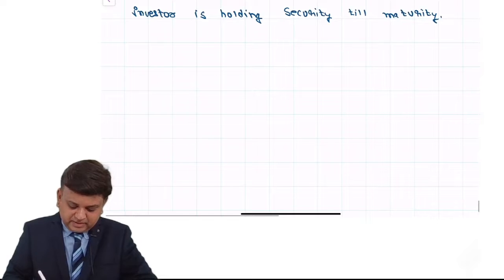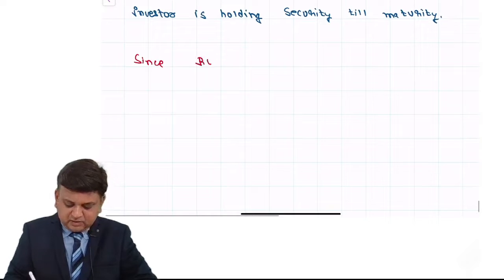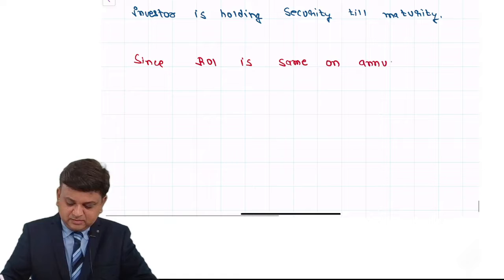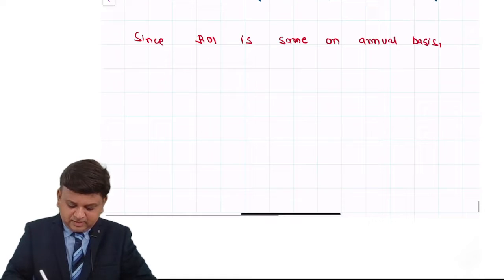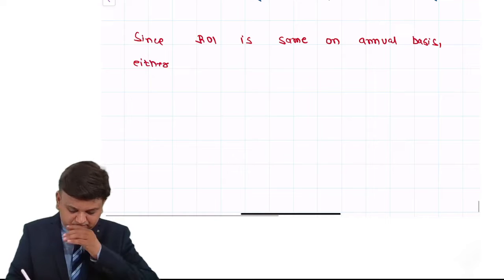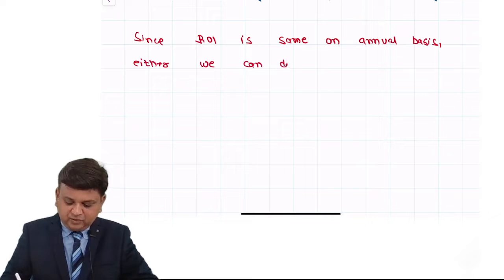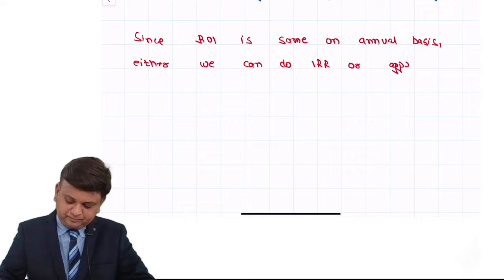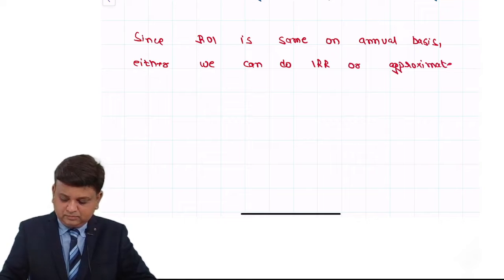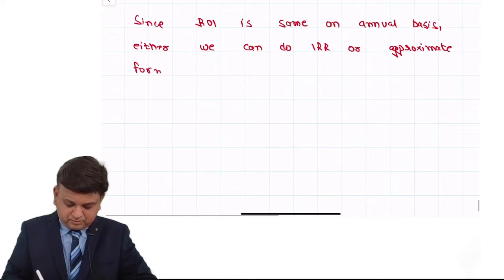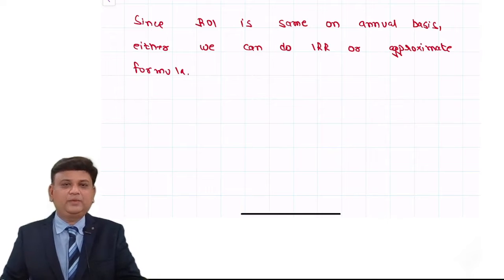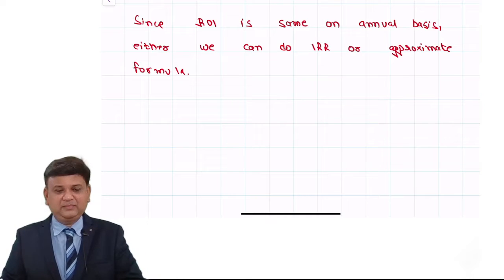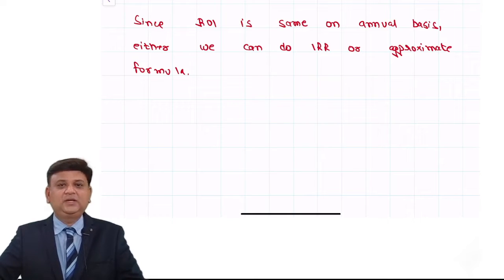Since the rate of interest is the same on an annual basis, we can either use IRR or the approximate formula. It is better to use the approximate formula because it will take less time. Please put your answer in the chat box — what is the yield to maturity using the approximate method?